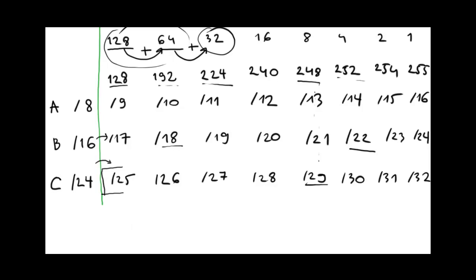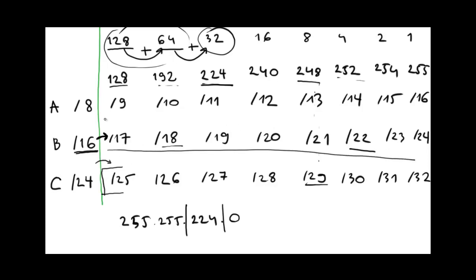We can work this in the other direction too. If given a subnet mask of 255.255.224.0, the value 224 appears in the third octet. We know Class B uses 16 bits across two octets, and adding more bits jumps to the third octet, so we read from the Class B row. For 224, the corresponding CIDR notation is /19.